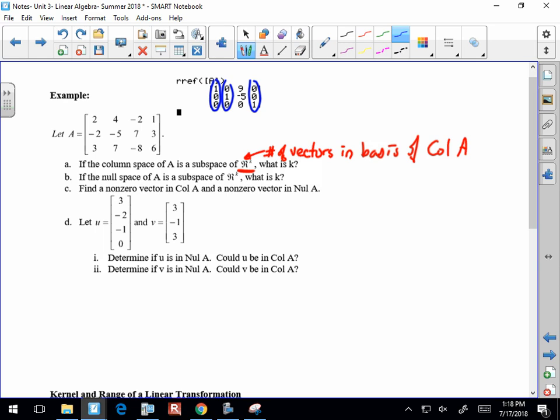All right, so you can define it any way you want. You know, C for column, R for row. You can do V1, V2, V3, whatever. What's that? K would be three. Yeah, but also specifically, you want to identify the basis of column A. The column space of A would be the set. I'll go V for vector. V1, V2, V3, V4, sorry.